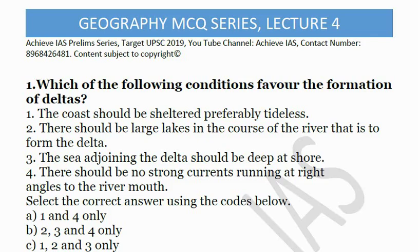The first question is: which of the following conditions favor the formation of deltas? Statement 1: the course should be sheltered, preferably tideless. Statement 2: there should be large lakes in the course of the river that is to form the delta. Statement 3: the sea adjoining the delta should be deep at shore. Statement 4: there should be no strong currents running at right angles to the river mouth. We have to choose the correct answer.